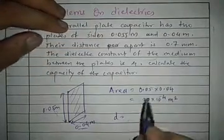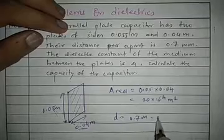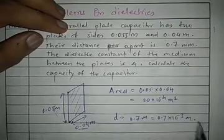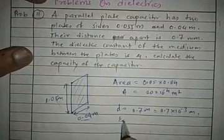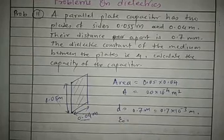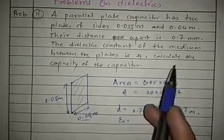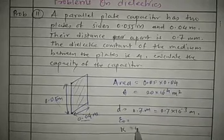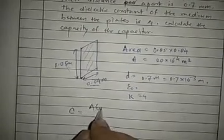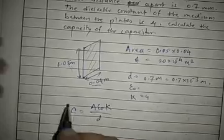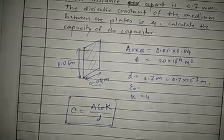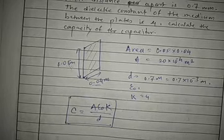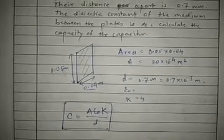D is given as 0.7 millimeter, that is 0.7 × 10⁻³ meter. The value of epsilon-not (ε₀) is 8.85 × 10⁻¹² . And K is given as 4. So you have to write: C is equal to A × ε₀ × K upon D. Put in the values and calculate.